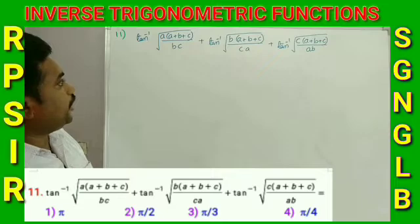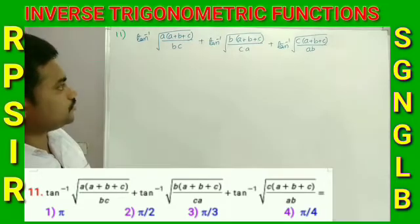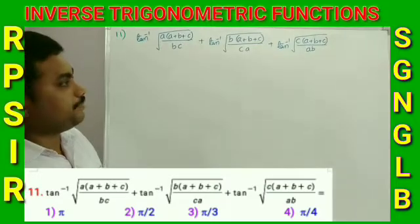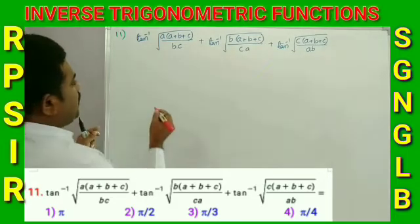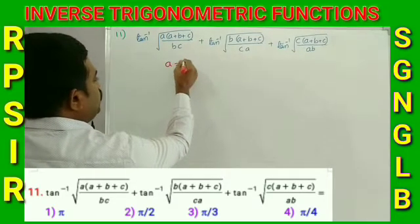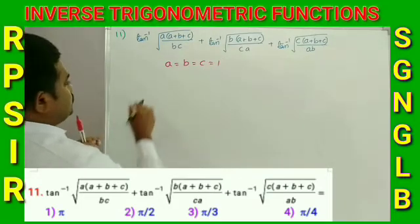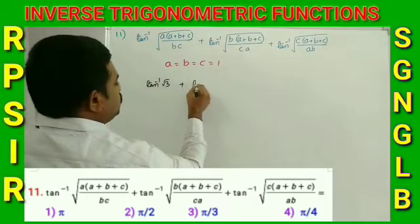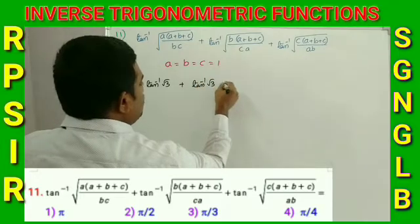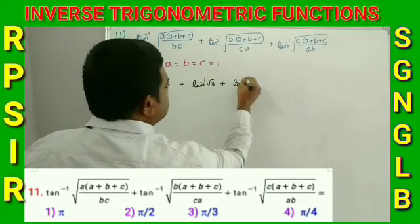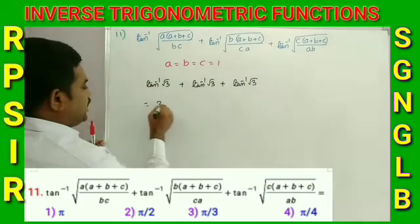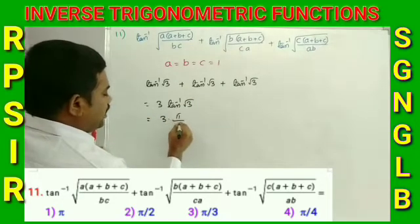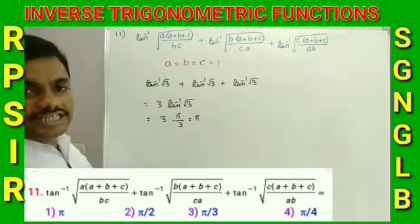Number 11: Evaluate tan⁻¹(√(a(a+b+c)/bc)) + tan⁻¹(√(b(a+b+c)/ca)) + tan⁻¹(√(c(a+b+c)/ab)). Using the trick of setting a = b = c = 1, each term becomes tan⁻¹(√3). So the sum is 3 × tan⁻¹(√3) = 3 × π/3 = π. Option 1 is the correct answer.